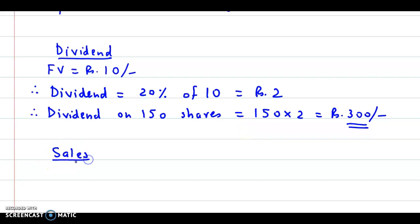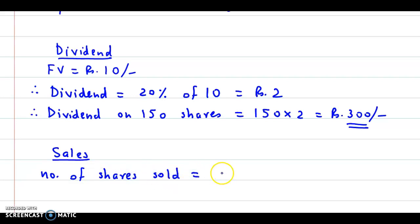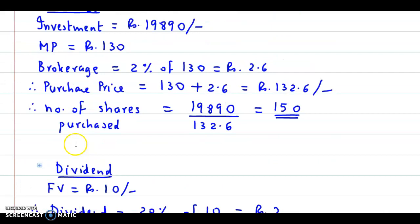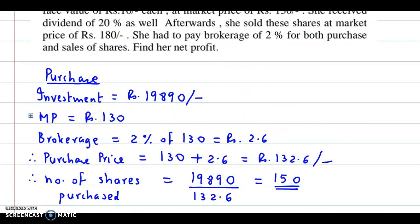Now let us focus on sales. There is no quantity of shares sold mentioned, so we assume that all the shares were sold. Number of shares sold is 150. The sales market price was rupees 180 and brokerage is 2%.